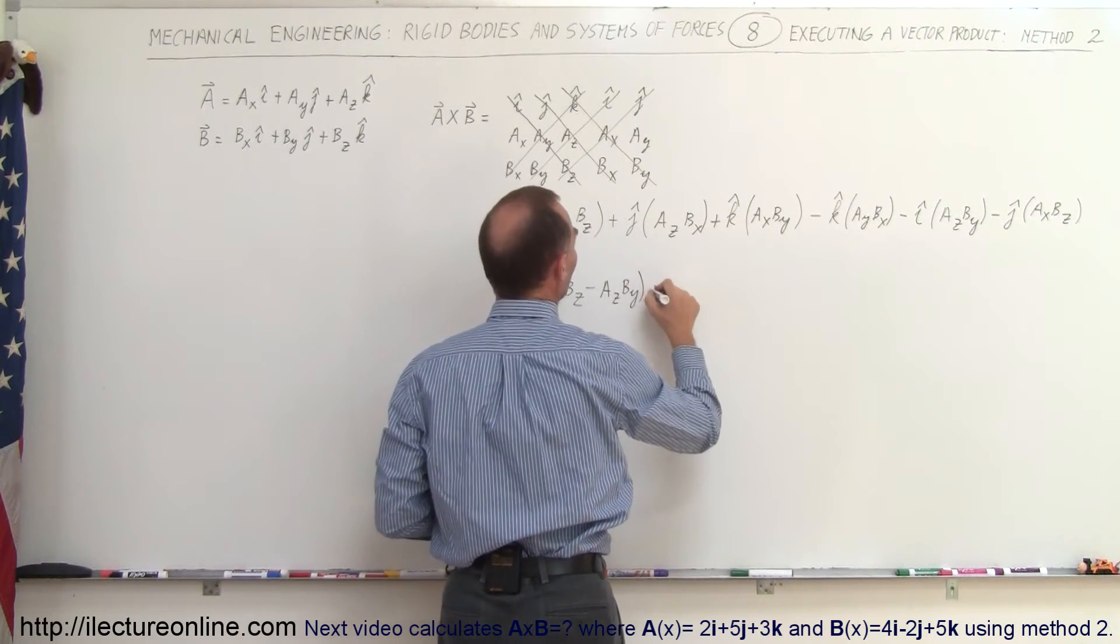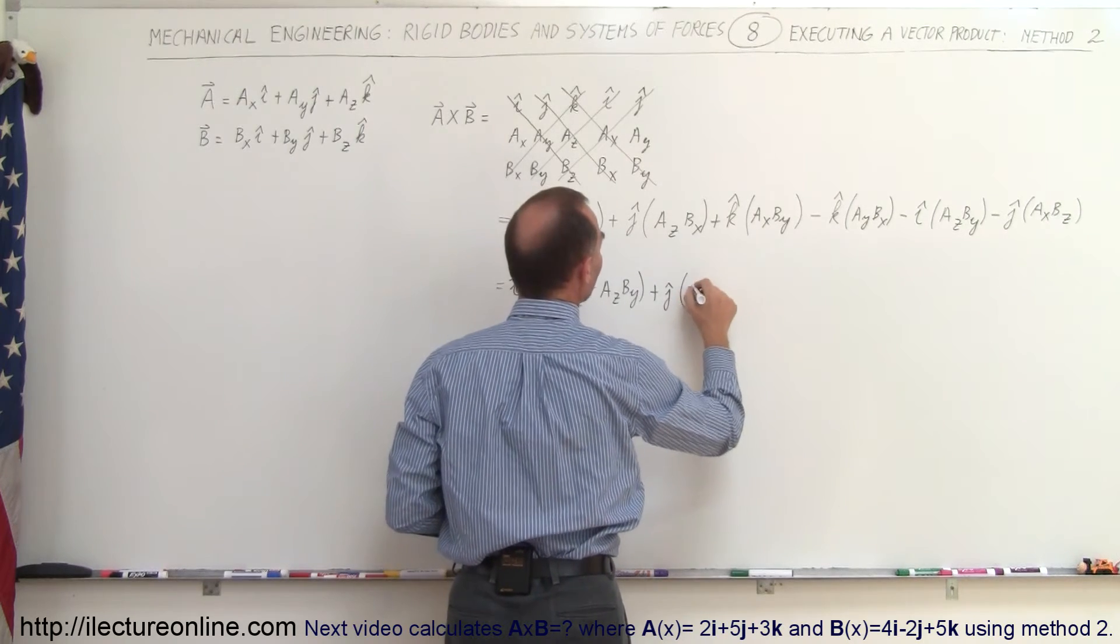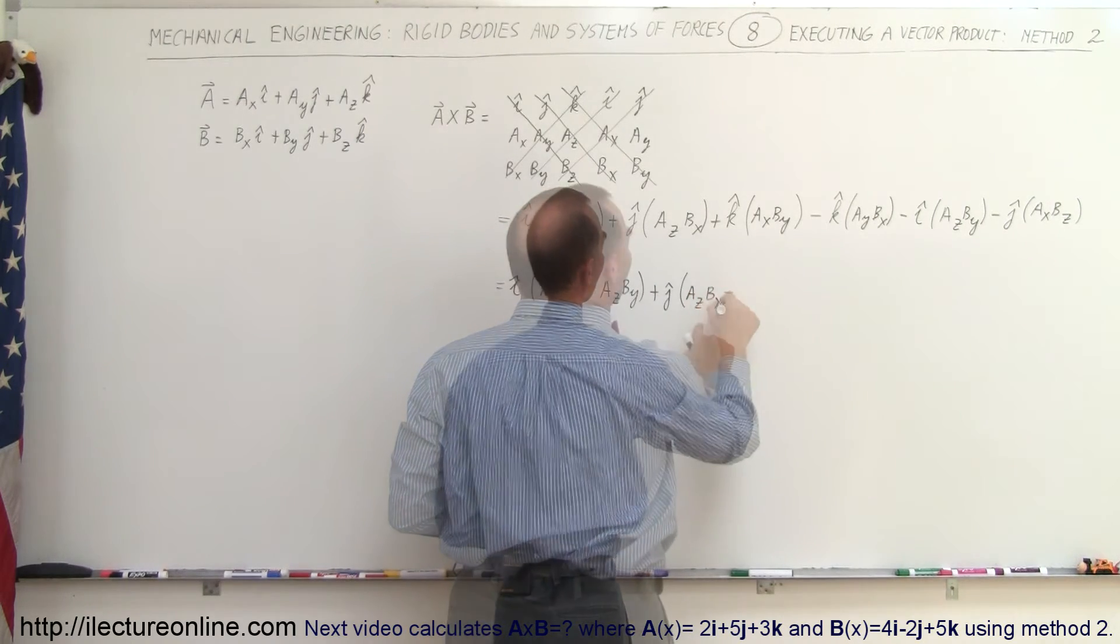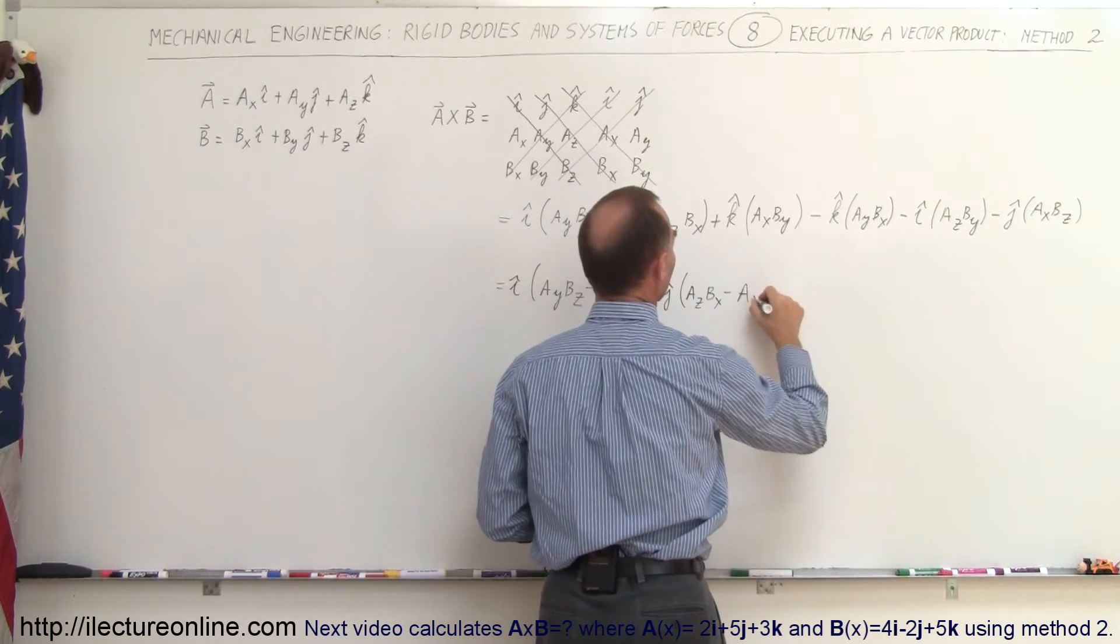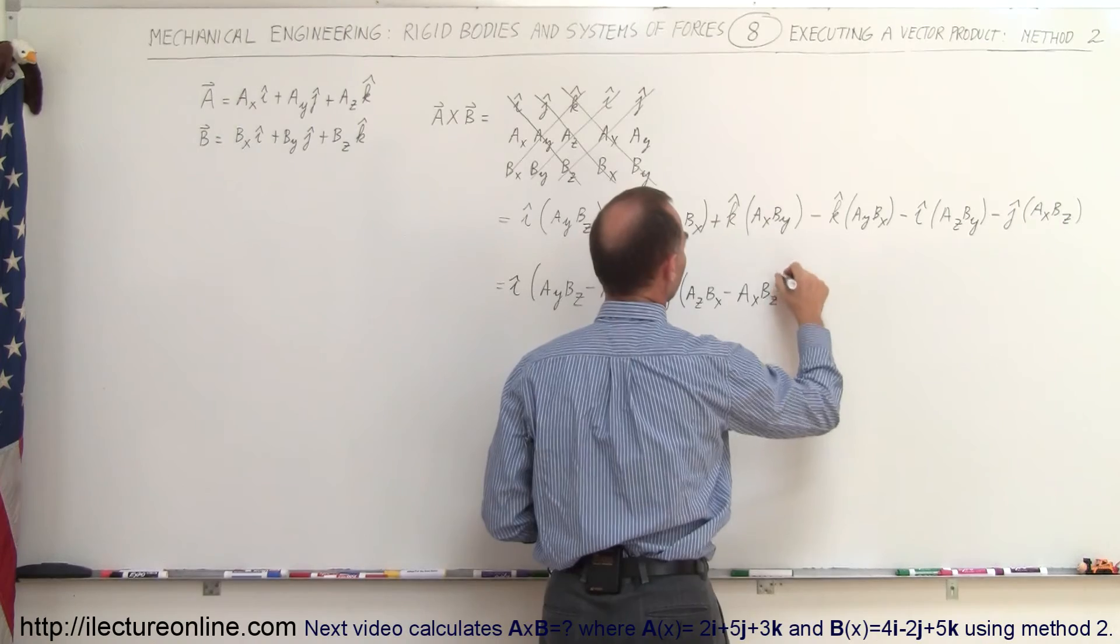That would be plus J times A sub Z B sub X and then minus over here A sub X B sub Z.